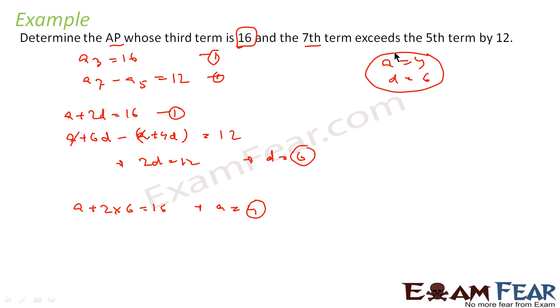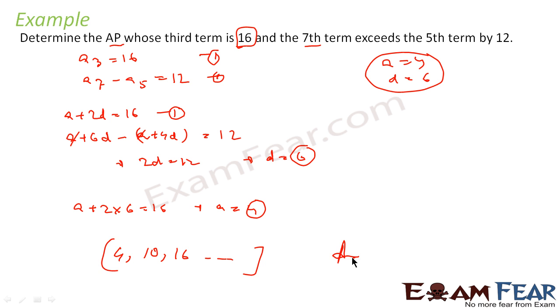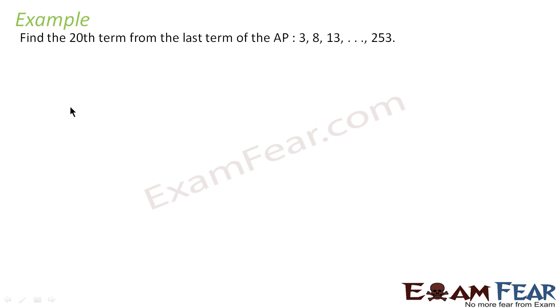AP is nothing but: a is 4, a plus d is 10, a plus 2d is 16, and so on. This is my AP. Very simple. I was given two equations, solved them to get the value of a and d.